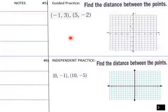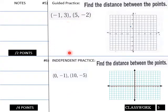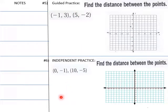Let's try one here in a guided practice and an independent practice. We're going to try this one first in our guided practice. Here's our line between negative 1 comma 3 and 5 comma negative 2.